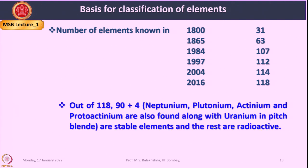Out of 118 elements in the modern periodic table, 94 are naturally occurring — including neptunium, plutonium, actinium, and protactinium, found along with uranium in pitchblende — and the rest are radioactive or manmade. So we have 94 natural elements and the remaining are manmade.